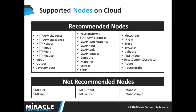IIB on Cloud does not support all the nodes. Here we look at which nodes are supported and which are not recommended. Some nodes like MQ Input and DB Input are not recommended because they can degrade the performance of the flows, since they interact with on-prem private endpoints. It is better to keep them on on-prem flows only.